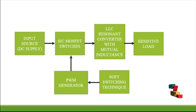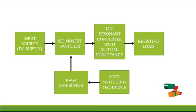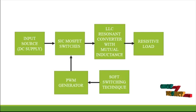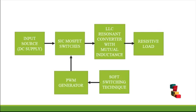The resonant network filters the higher harmonic currents, so essentially only sinusoidal current flows through the resonant network even when a square wave voltage is applied. The current lags the voltage applied to the resonant network — that is, the fundamental component of the square wave voltage VD applied to the half bridge — which allows the MOSFETs to be turned on with zero voltage.